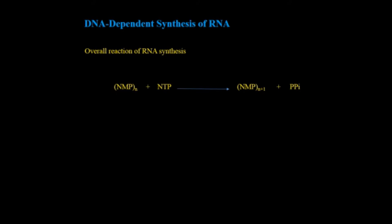The overall reaction for RNA synthesis is that N number of nucleotide monophosphate combined with NTP to form NMP n plus one, increasing the number by one with the release of pyrophosphate. In this case RNA polymerase is used. As I have discussed in DNA polymerization, the main enzyme was DNA polymerase.